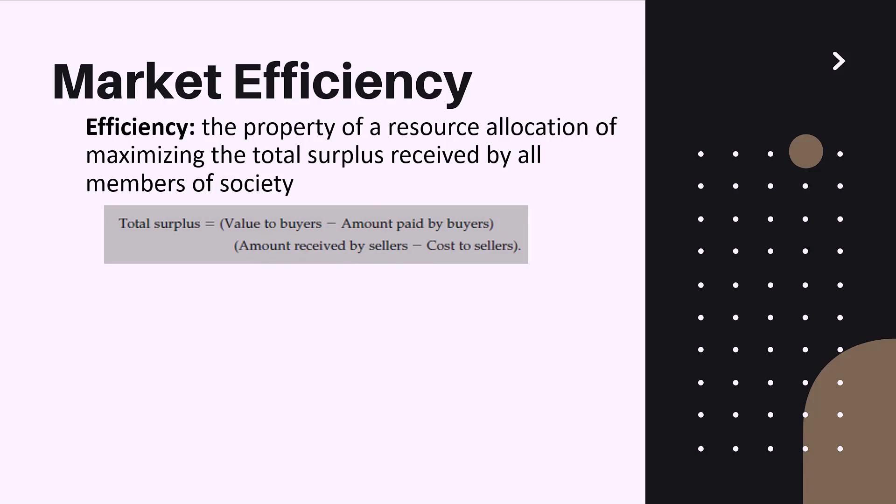From an economic view, a higher total surplus translates to higher social wealth. To illustrate: say you want to buy ice cream and are ready to pay four dollars, and the price is four dollars — your consumer surplus is zero. If the price drops to two dollars, your consumer surplus becomes two dollars, since your willingness to pay stays at four dollars and subtracting the price of two dollars gives a surplus of two dollars. You can buy the ice cream and spend the remaining two dollars on other things, like another ice cream.